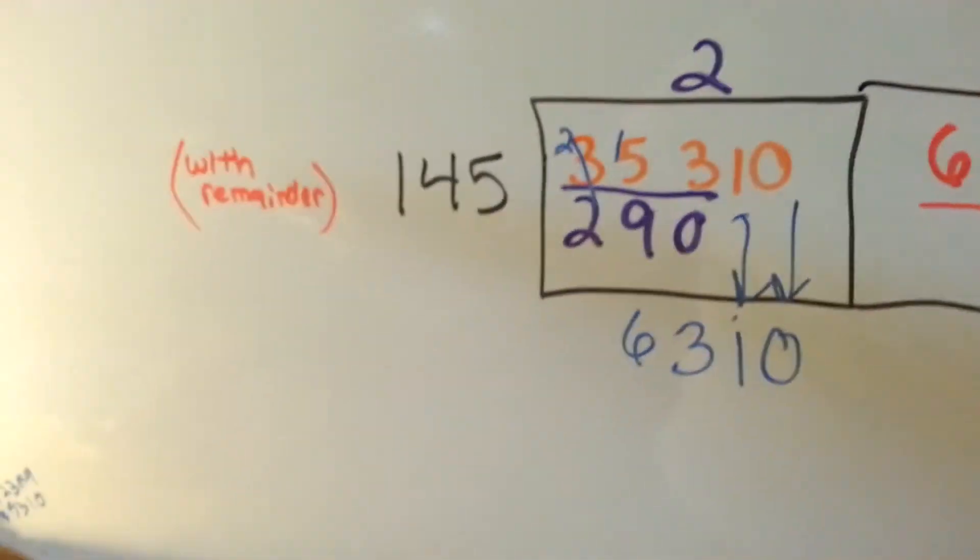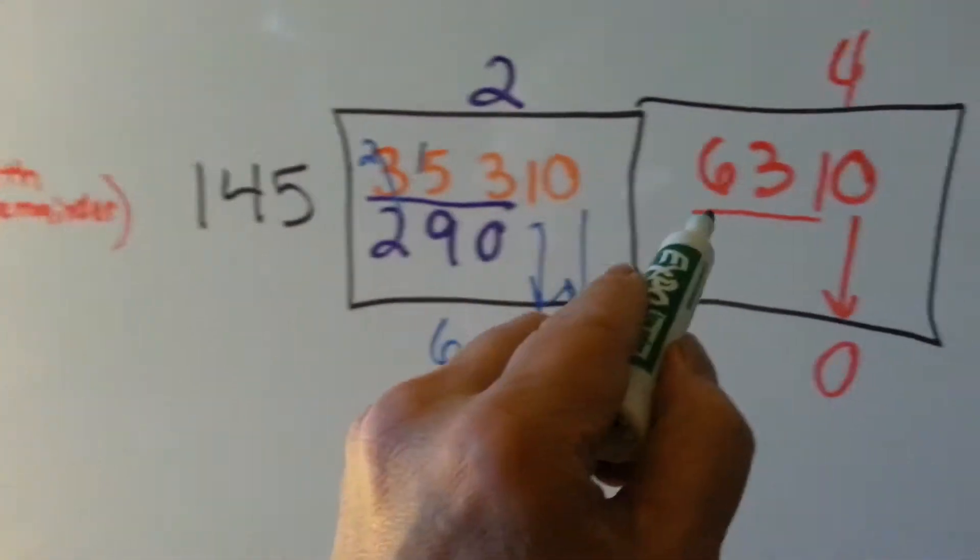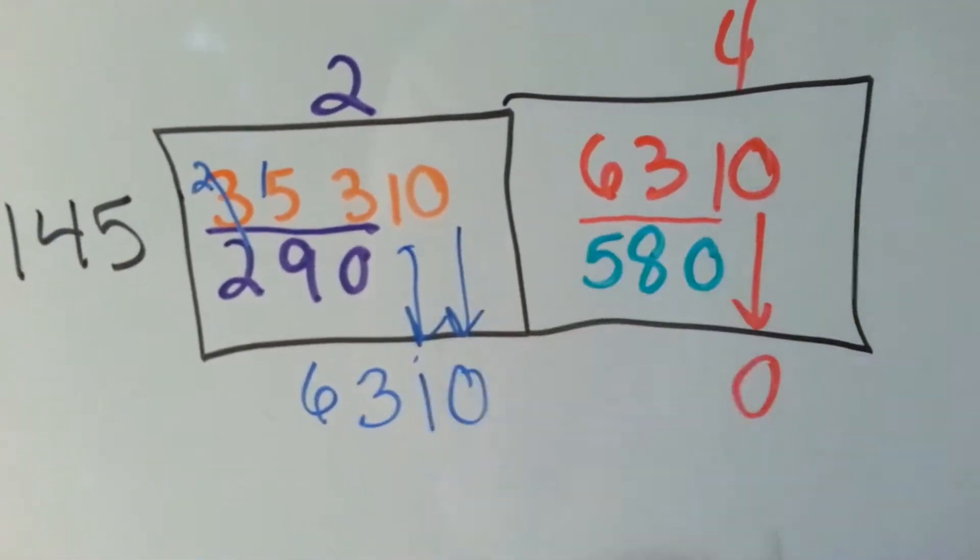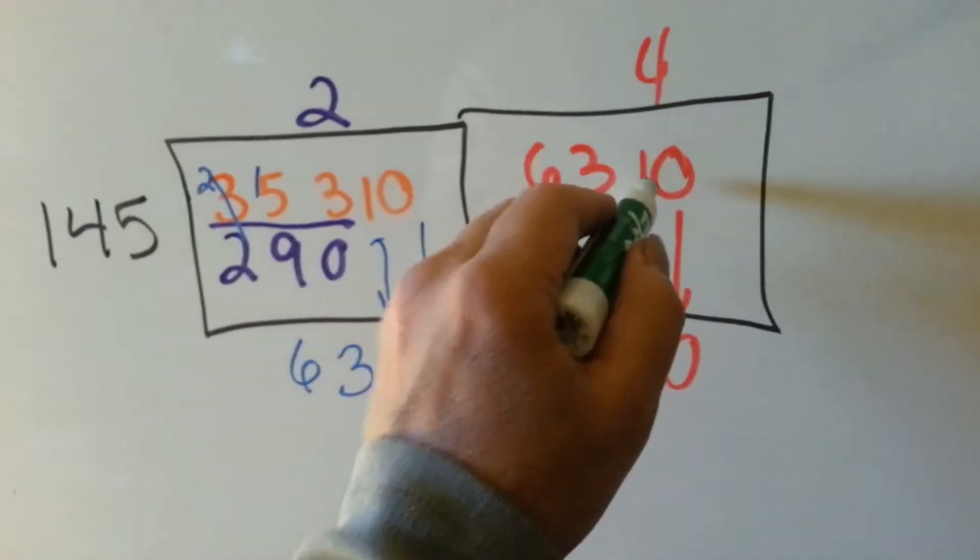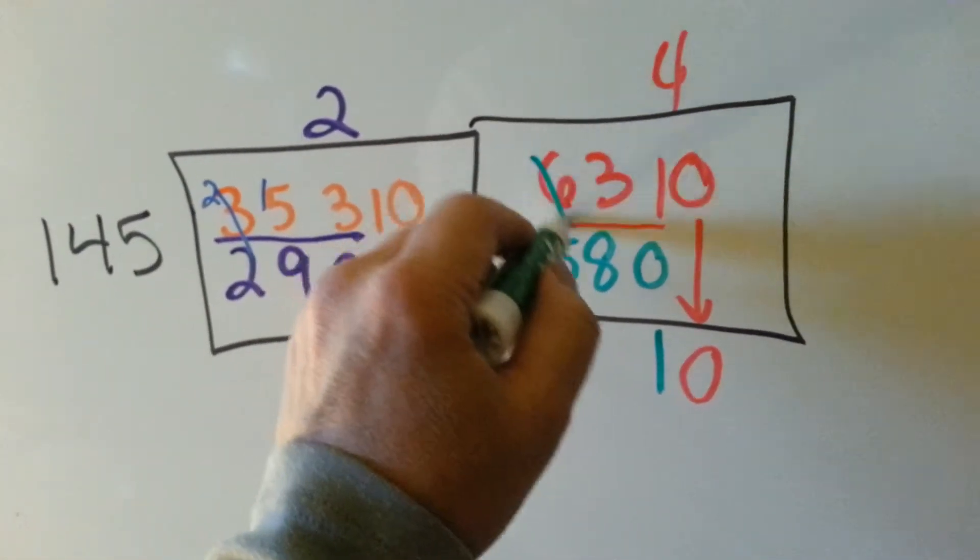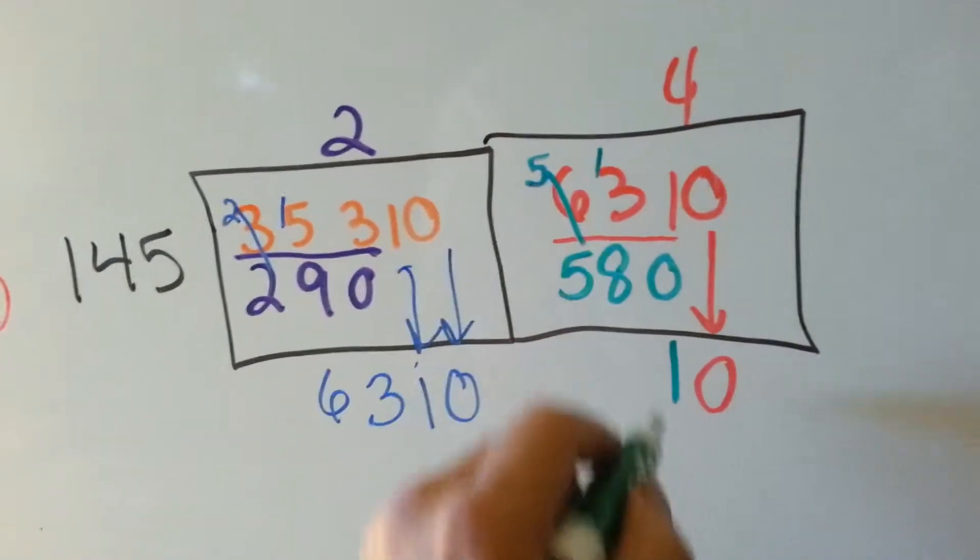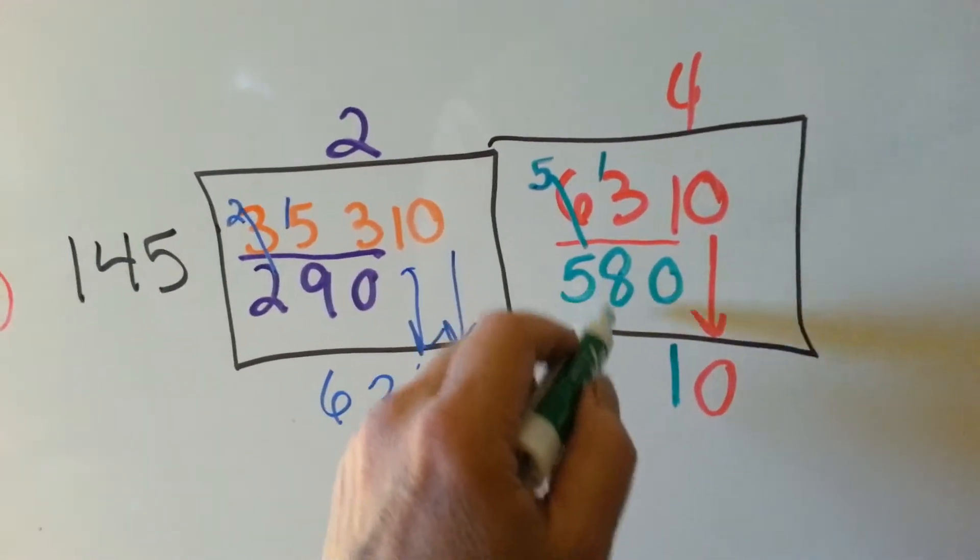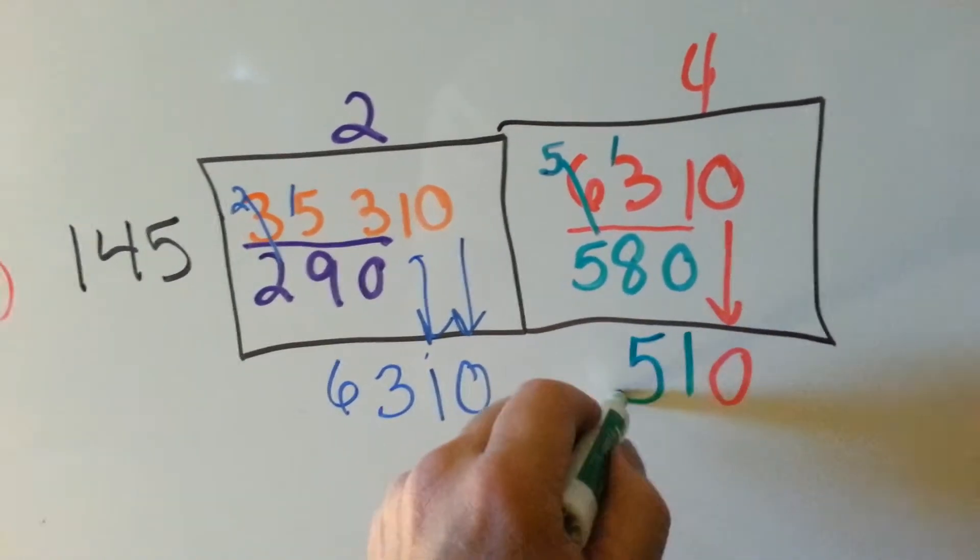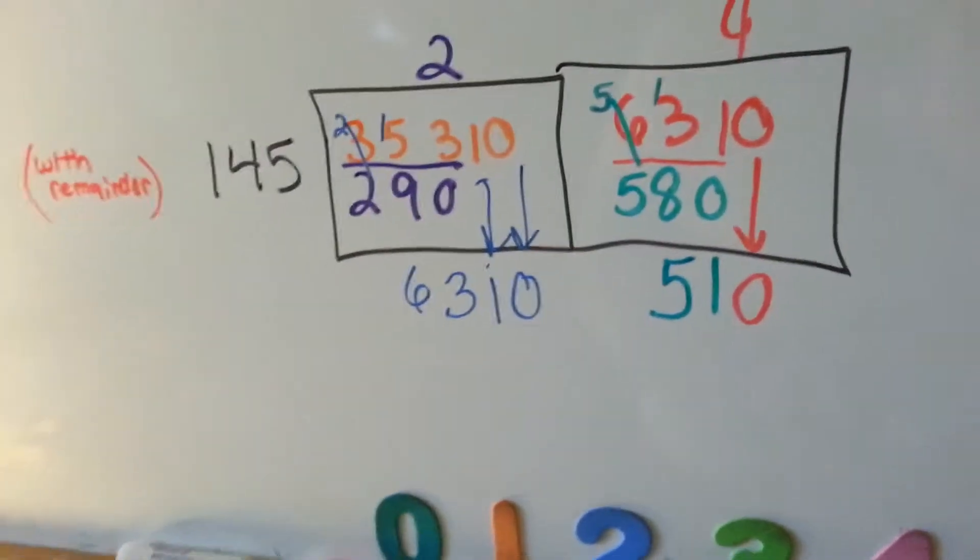And we're going to put the 580 in here. And we're going to do our subtraction. 1 take away none is 1. 3 take away 8 can't do it, so we're going to have to borrow. 13 take away 8 is what? 5, right? So, now we've got 510 left over.